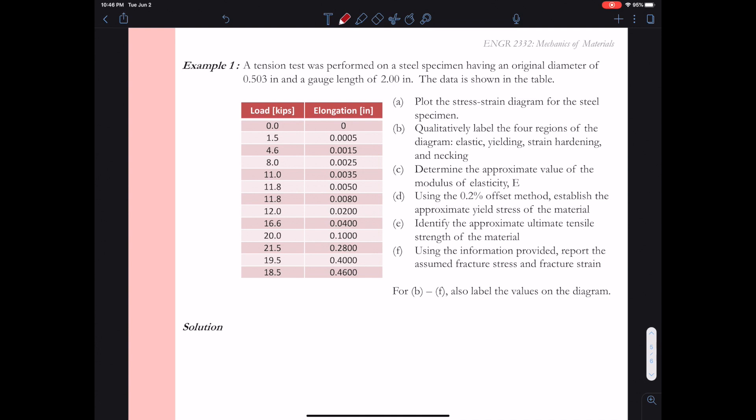We're asked to do a variety of things: plot the stress strain curve, label the four regions of the curve, come up with an approximate value for E, come up with the yield stress, identify the ultimate tensile strength in the material, and then report the fracture stress and the fracture strain.